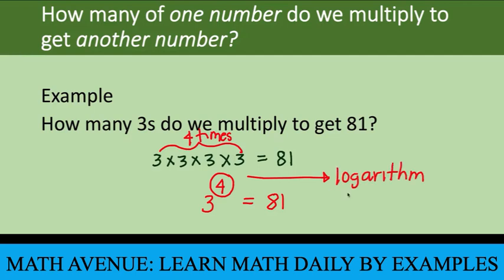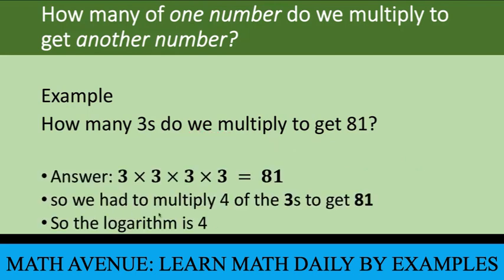You might be thinking: 4 is the exponent. You're right, because logarithm means exponent. So we have to multiply four 3s in order to get 81, and this 4 is the logarithm.